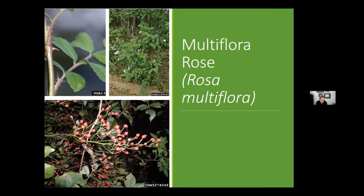Similarly, multiflora rose was introduced to the United States in the late 1800s and was used frequently as erosion control or living fences — it's probably something you're familiar with in this area. It's got those nice recurved thorns, which if you try to make your way through a thick of this stuff is hard to forget. It requires frequent cutting or mowing, at least three times per growing season if you can do that, and you have to maintain consistency because it has very high seed production. It can form thickets that become impenetrable.